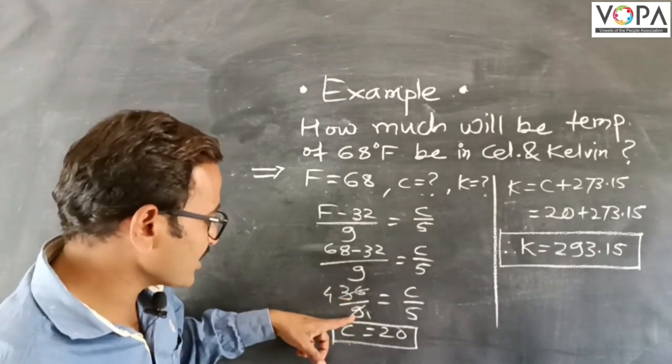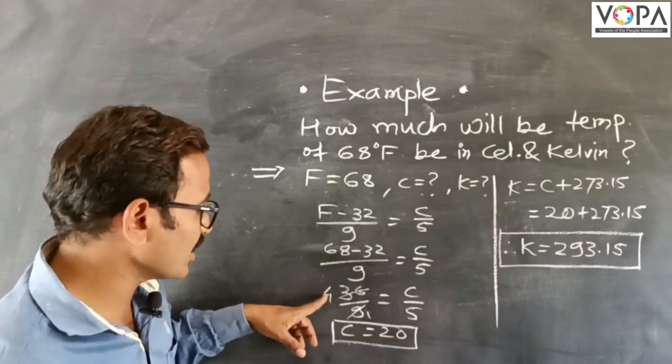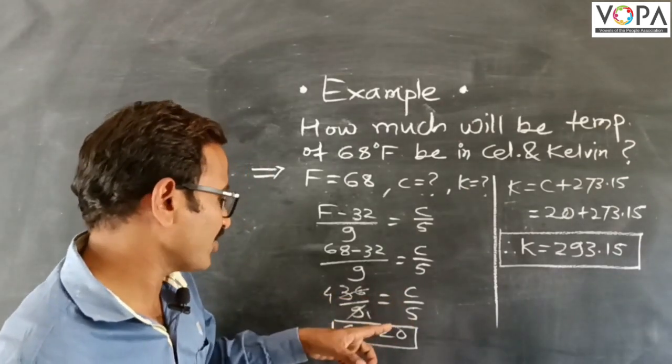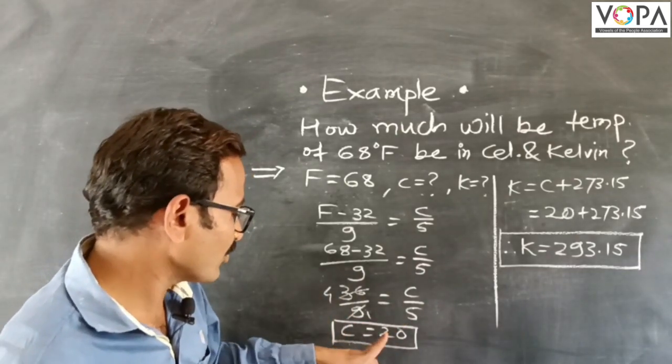36 divided by 9 is equal to 4. Therefore, we have 4 equals C divided by 5. Multiplying by 5, we get C equal to 20.